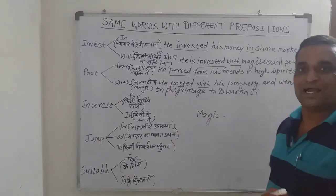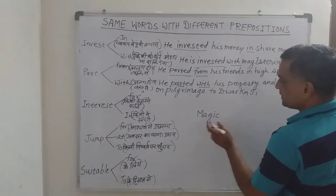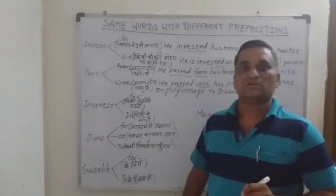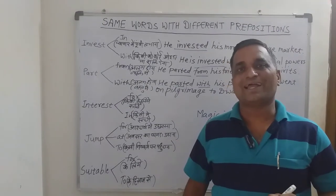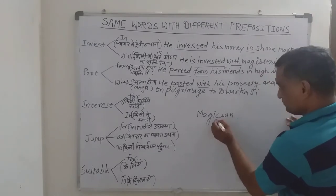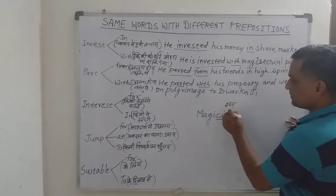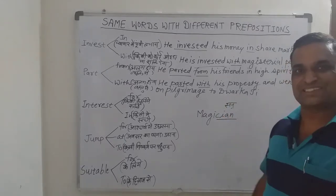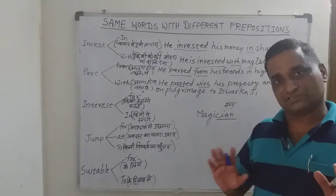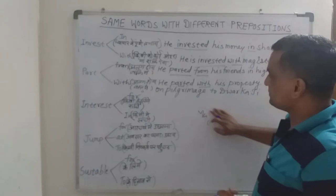Now here I have written the word 'magic.' When we change this word by adding a suffix, it becomes 'magician' — not 'magician.' The '-tion' suffix is pronounced as '-shun,' so the correct pronunciation is 'magician,' not 'magician.' There will be no hard 'c' sound — it will be 'magician.'